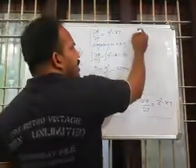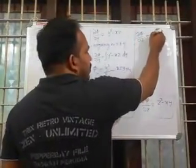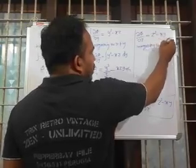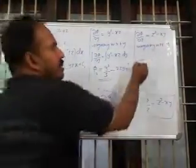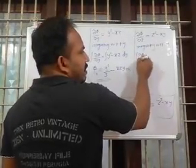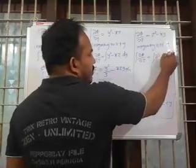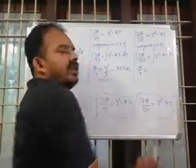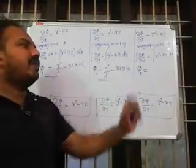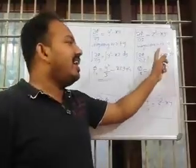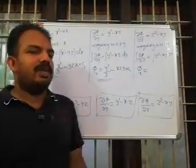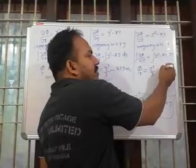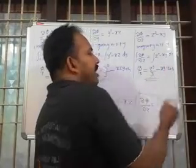Then integrating dou φ/dou z = z² - xy with respect to z gives φ₃ = z³/3 - xyz + c₃.